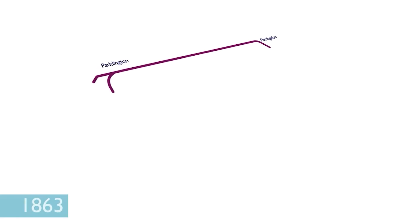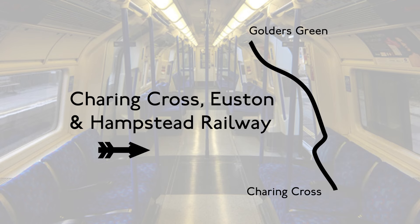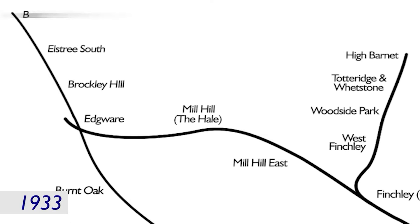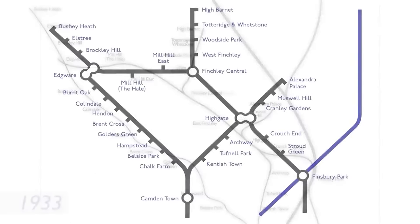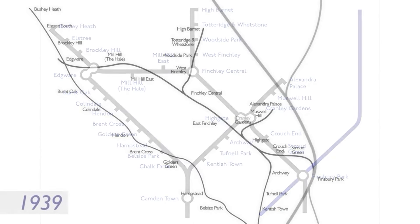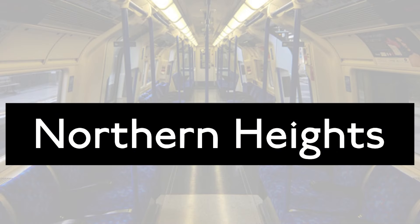What would become the Northern Line was created as the City and South London Railway. The western side was originally built as the Charing Cross, Euston and Hampstead Railway, later abbreviated to the Hampstead Tube. As these two met at Kennington and Euston they later merged together, and when plans came together to extend it much further north it became known as the Northern Heights Plan. The Second World War intervened though and the expansion never happened, but with the formation of the London Transport Passenger Board in 1933, they took the name from the Northern Heights and abbreviated the line down to the Northern Line.